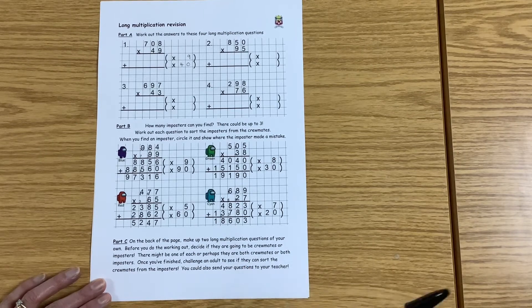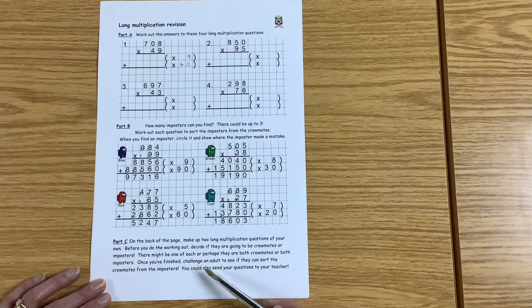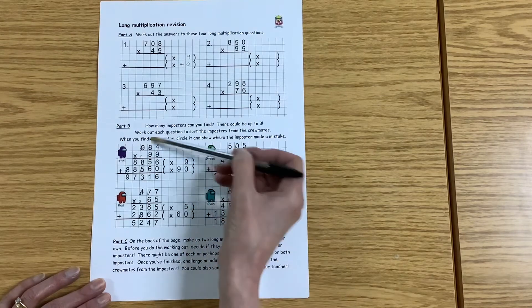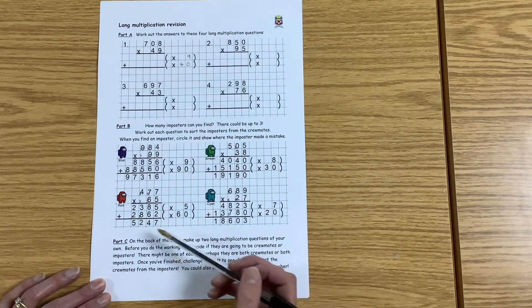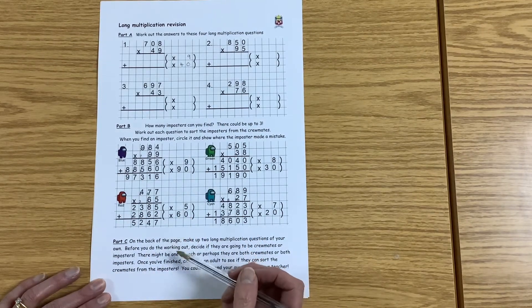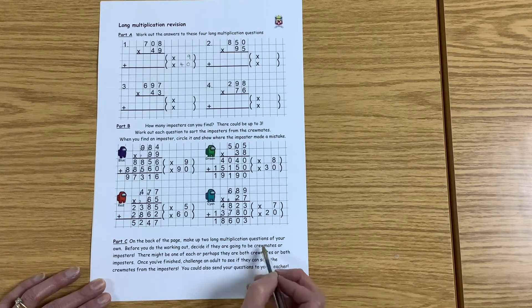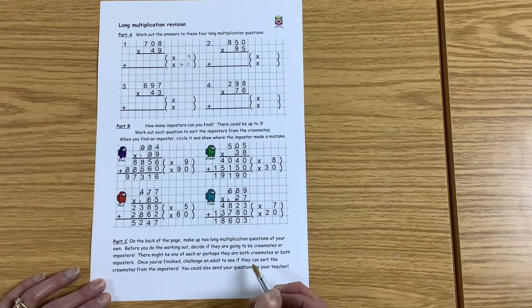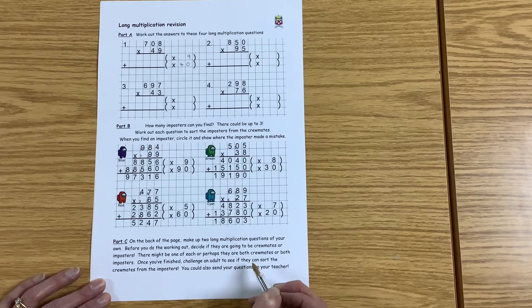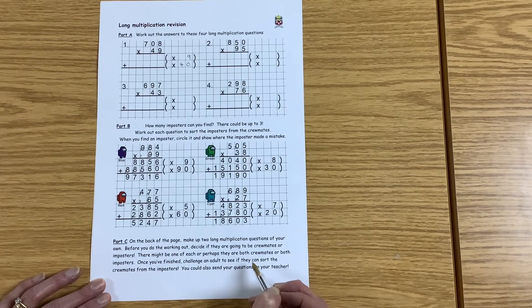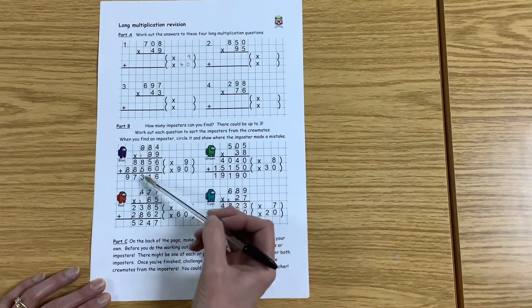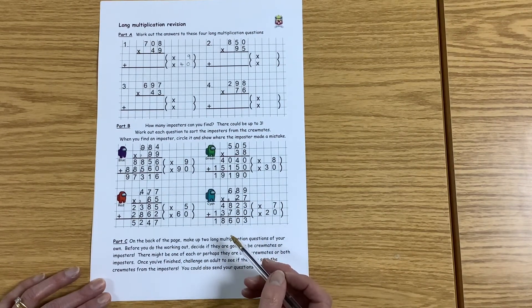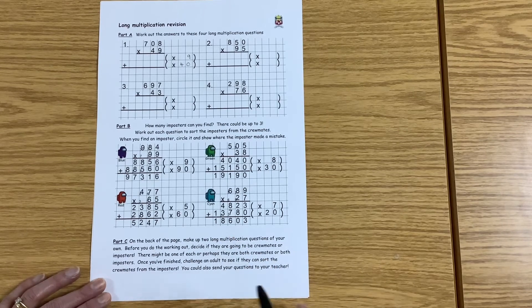For your final part of your long multiplication challenge, on the back of your page, I would like you to make up two more questions for somebody in your house to have a go at. I'd like you to set them out like this, so you do all your working out. For your two questions, you might decide that both are going to be crewmates because the answers are absolutely right. But maybe you'll decide to make a mistake in one or both of the questions and make them into imposters. It is entirely up to you. Finish them off, do all your working out, then give your page to an adult in your house and get them to see if they can sort out the crewmates from the imposters.